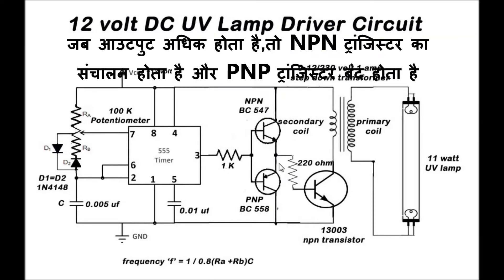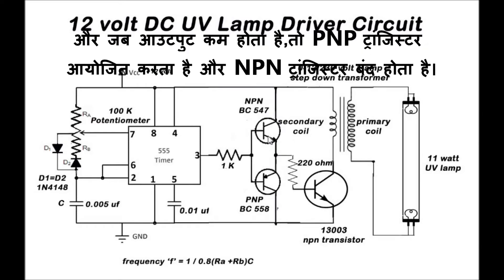When the output is high, the NPN transistor conducts and the PNP transistor is off. And when the output is low, the PNP transistor conducts and the NPN transistor is off.